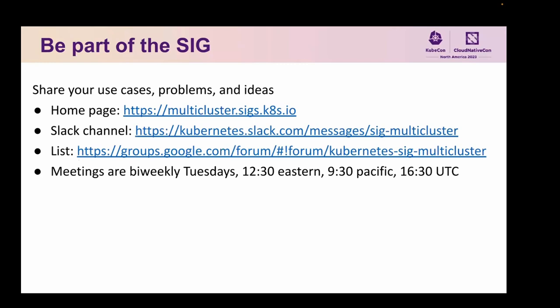The meetings do get cancelled if there's no agenda, so if you want to talk about things, be sure to add your information to the agenda. You'll find the information about where that lives on the homepage. The way to find out about all this is to go to the website and join the Google Group, which will automatically push invitations to you for the bi-weekly meetings. The meeting invites have links to the agenda that you can fill in ahead of time, and you'll also find notes from previous meetings so you can see what's been discussed.